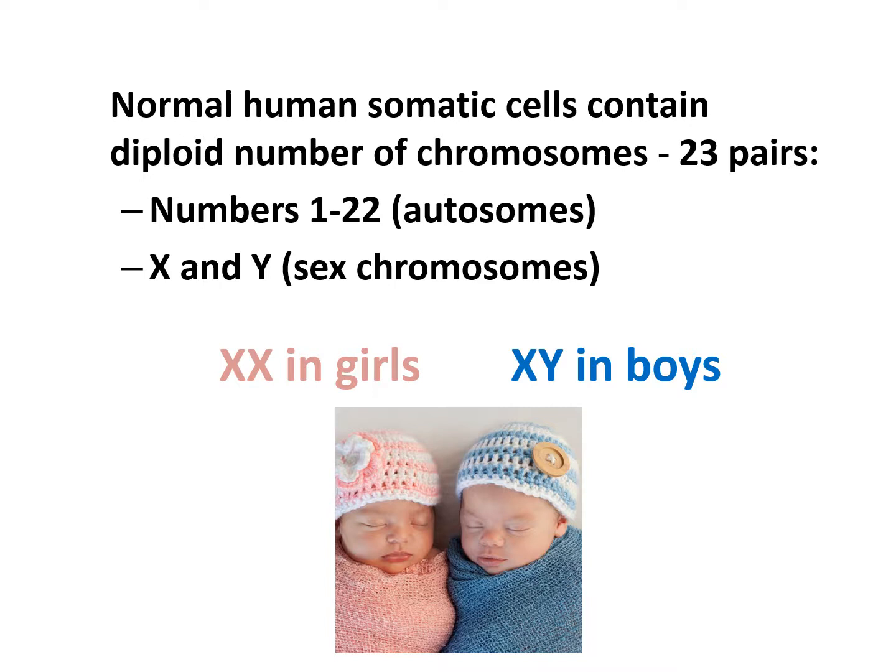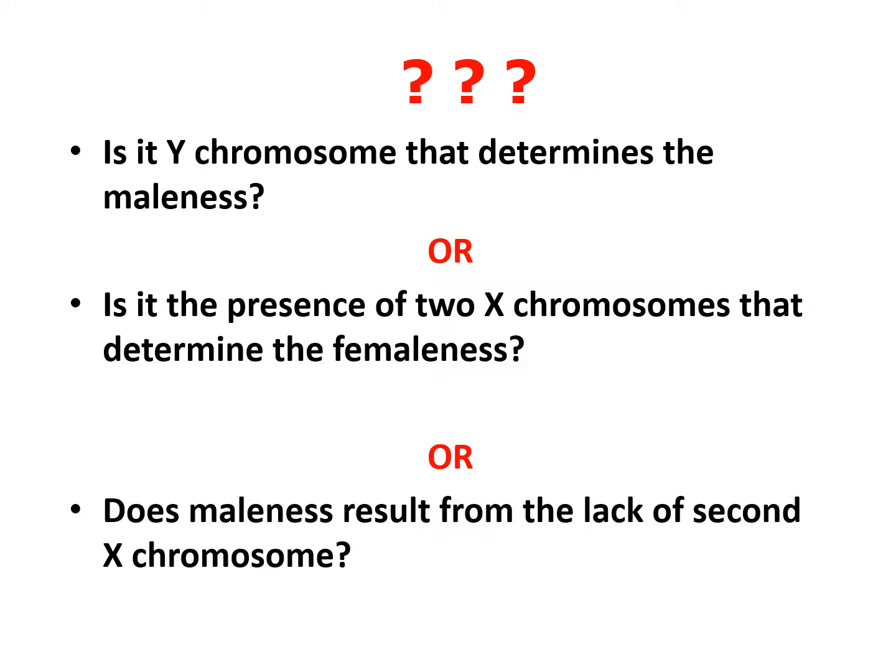As we know, normal human somatic cells contain diploid number of chromosomes — 23 pairs. From 1 to 22 we have autosomes, and X and Y represent sex chromosomes. There is XY in boys and XX in girls. So here's the question: is it the Y chromosome that determines maleness, or is it the presence of two X chromosomes that determines femaleness?